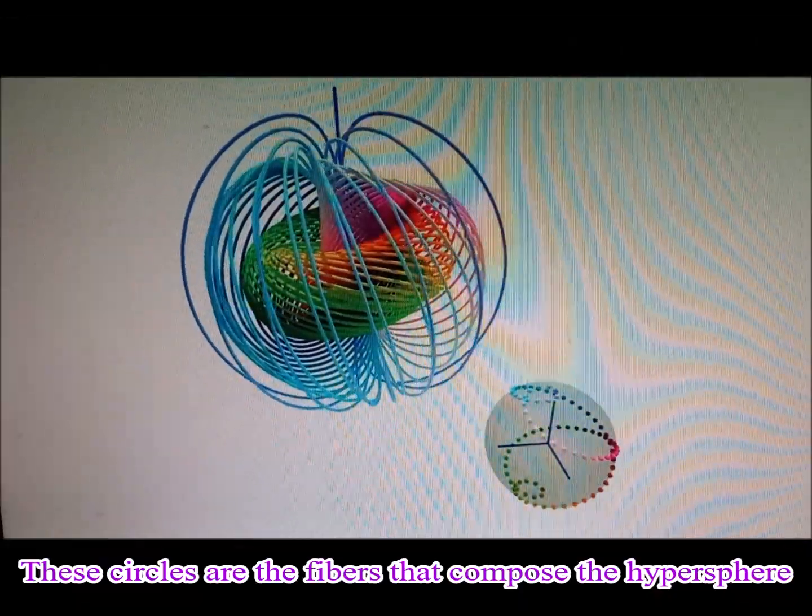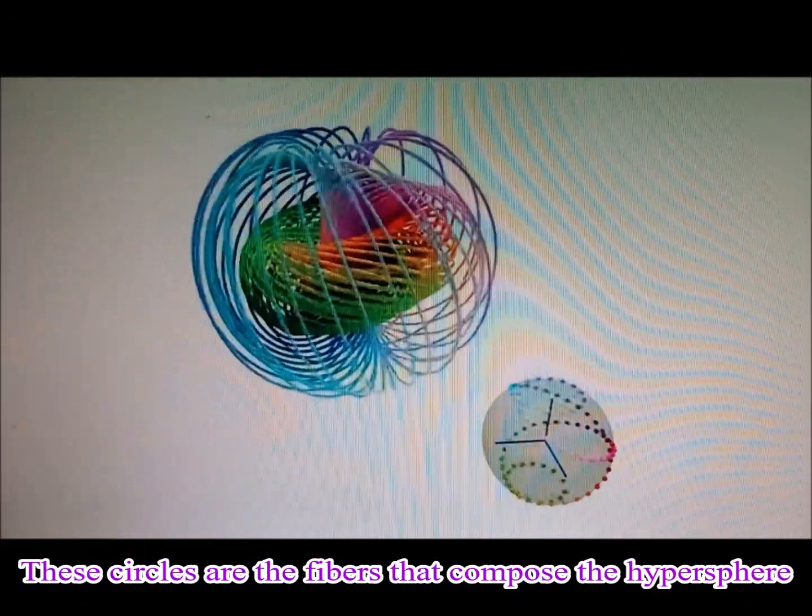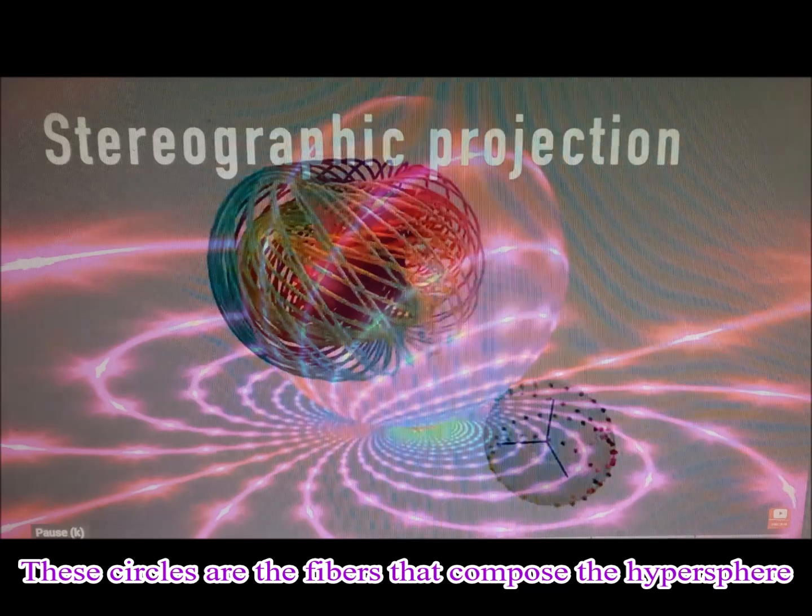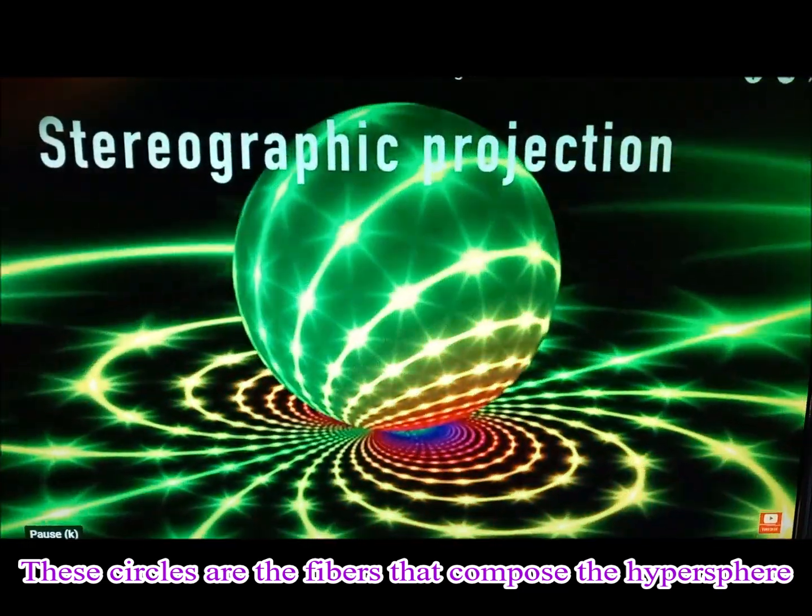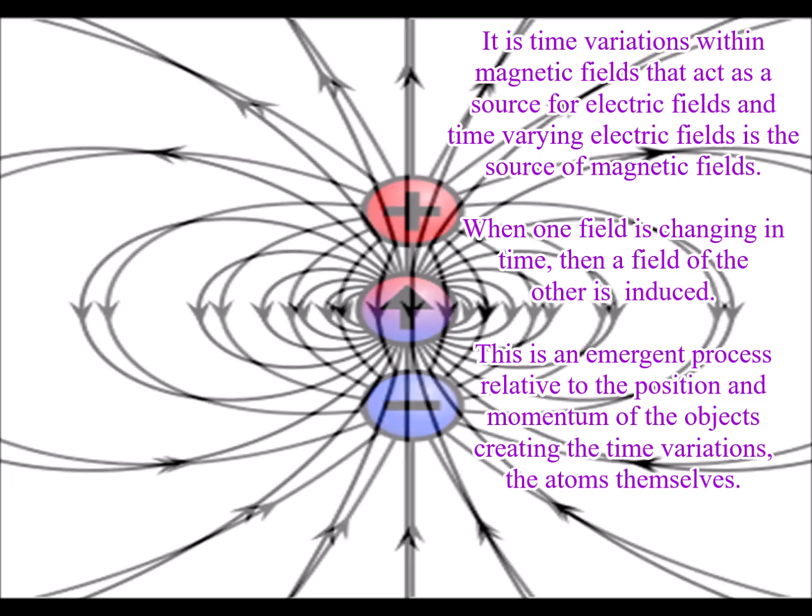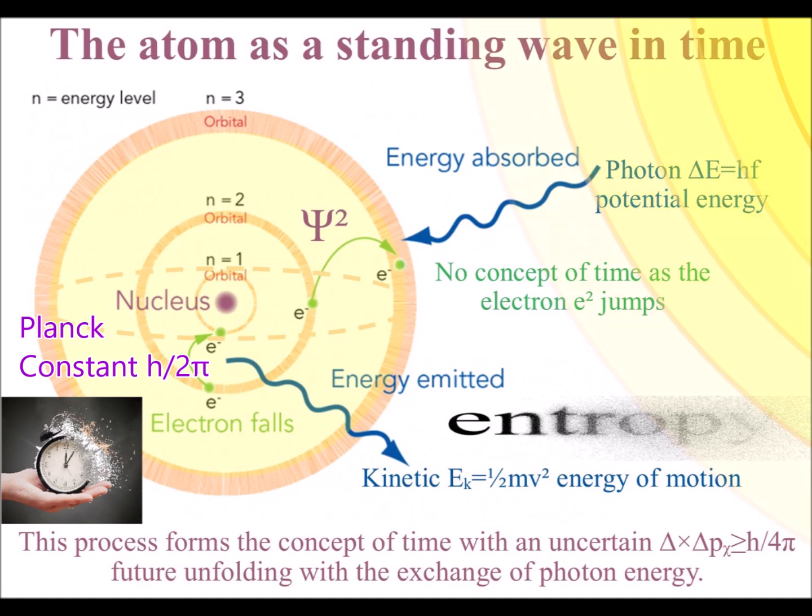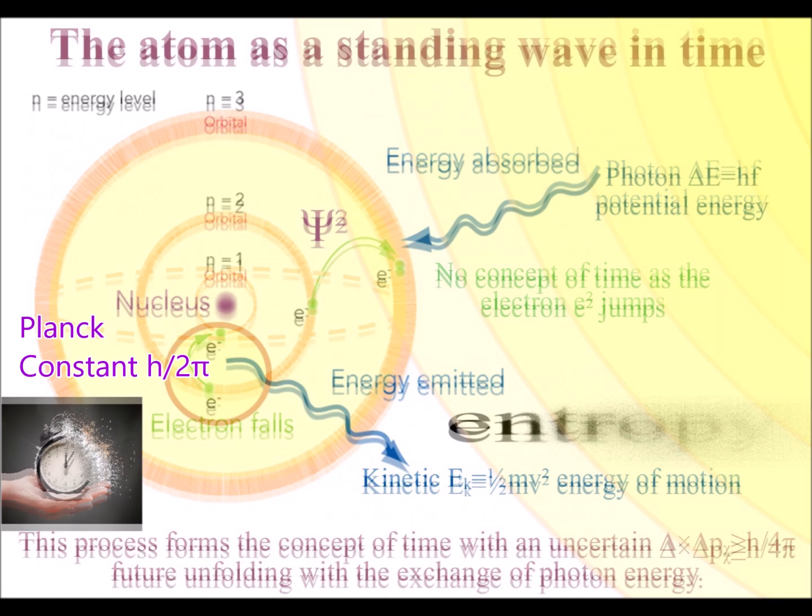The circles in the Hoth vibration represent electromagnetic field lines, with the two-dimensional surface of the base sphere forming a boundary condition, or manifold, for positive and negative charge, as a probabilistic future unfolds with the exchange of quantized energy.